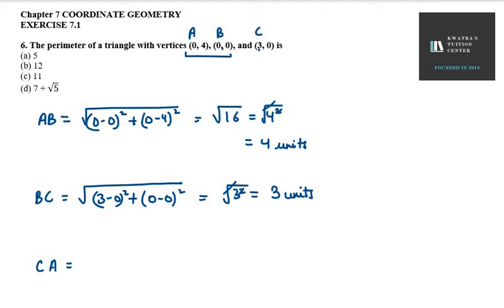Now, we come to CA. So what will be CA? It will be 3 minus 0 whole square and the other will be 0 minus 4 whole square. So, 3 squared is 9, minus 4 whole square is 16. So you will get under root 25. Under root 25 can be written as 5 units.